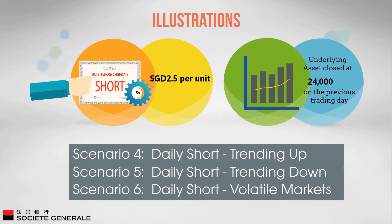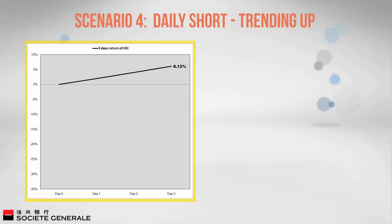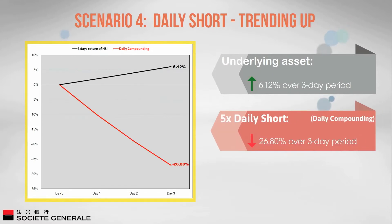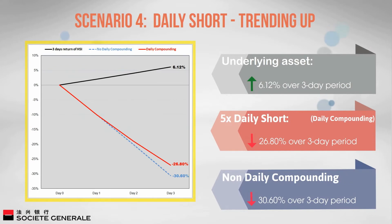We now assume the investor purchases a five times daily short at 2.5 Singapore dollars per unit, with the underlying asset closed at 24,000 on the previous trading day. Daily short — trending up: The underlying asset's daily performance is 2% for three consecutive days, increasing a total of 6.12%. The five times daily short has fallen 26.8%, which is 4.38 times the inverse performance of the index (26.8 ÷ 6.12), because each day the loss is applied to a progressively smaller amount. Without compounding, the five times daily short would have decreased by 30.6% (6.12% × 5).